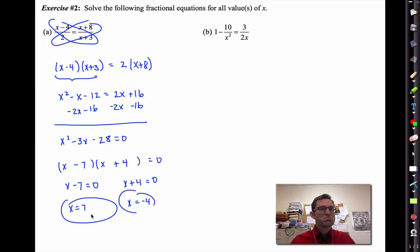Simple cross-multiplying. You could have seen that problem easily in Algebra 1, especially the new Common Core Algebra 1. Actually, no, Common Core Algebra 1 doesn't have rational equations in it. But let's take a look at letter B.